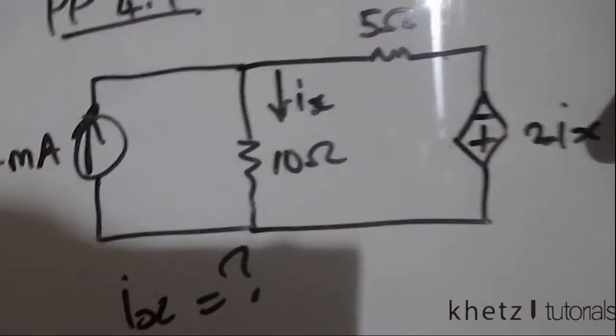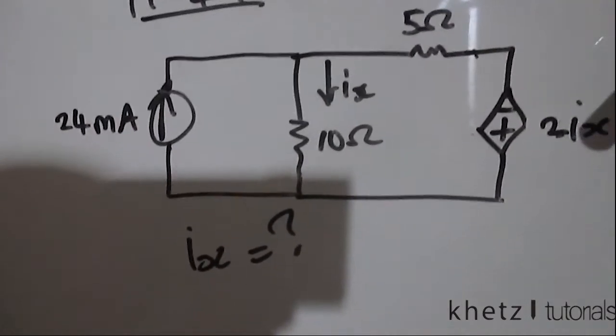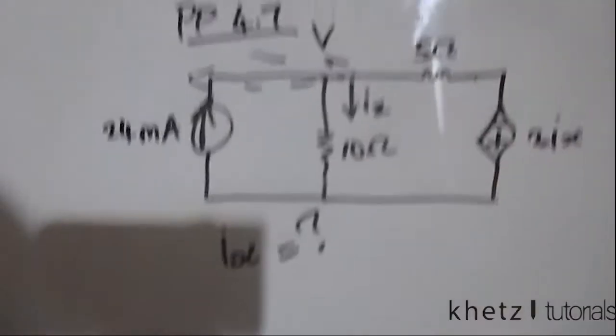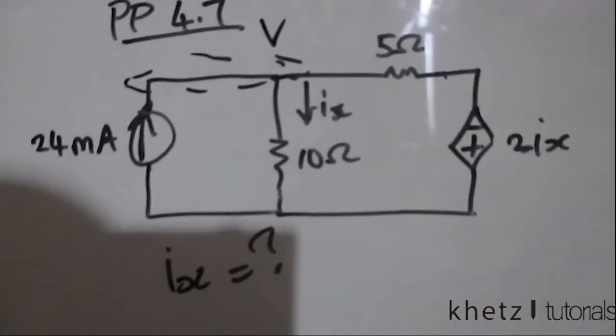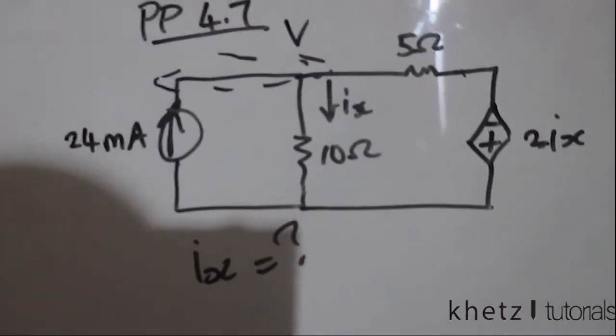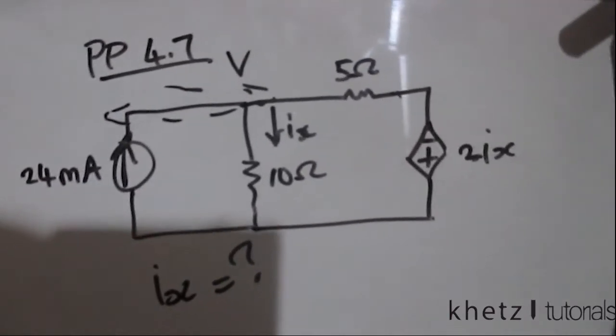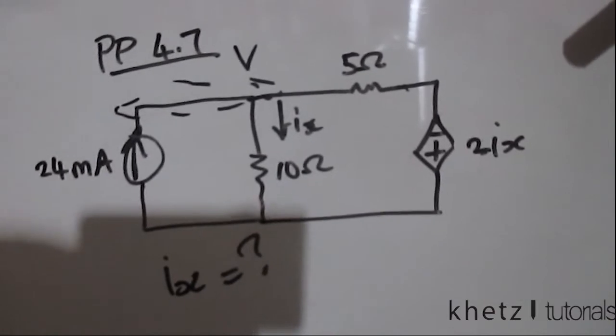Now if you look at this, you could easily solve this using nodal analysis just from a variable there and find your ix from equations. But since we are actually practicing source transformation, let's just go ahead and follow the instructions which are given.